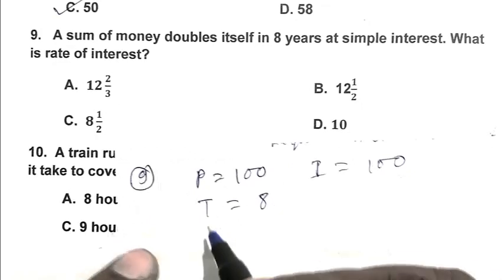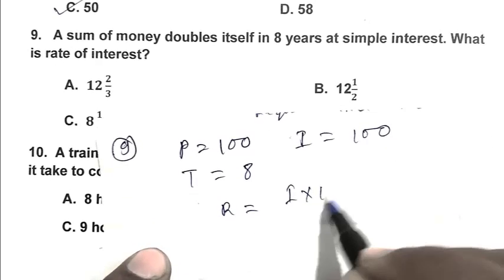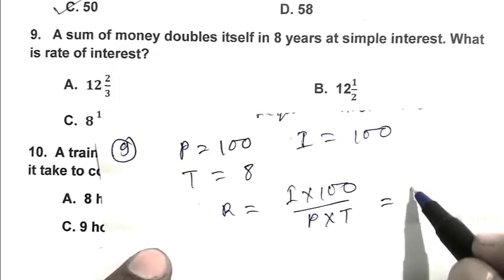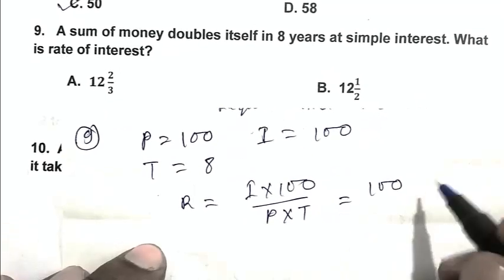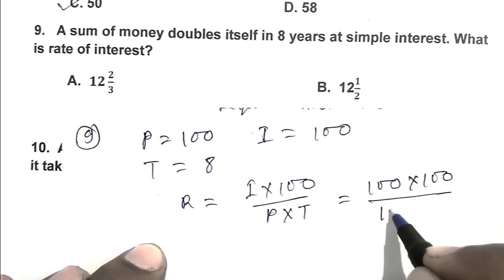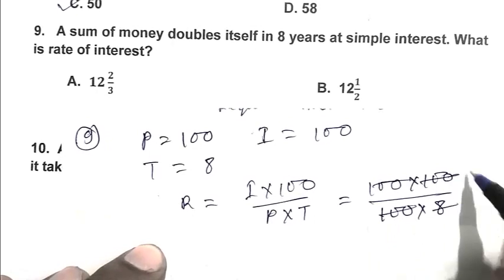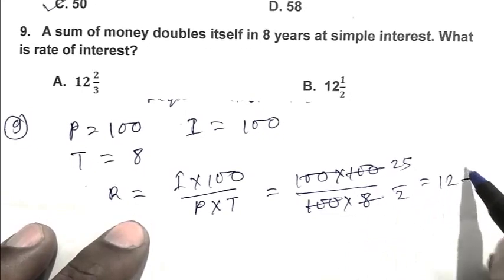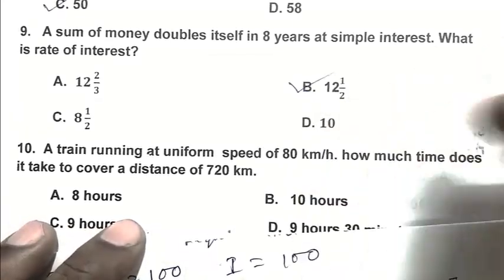So the rate is I multiplied by 100 by P multiplied by T. So 100, 100 by 100, 8. That is 100 upon 8, which is 25 by 2, that is 12 and a half. So B is the right answer.